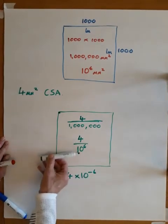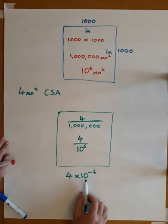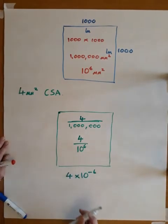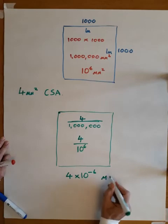So one over, this is the same as four over ten to the six. Four times ten to the minus six, they are the same number. So four times ten to the minus six is four millimeters squared in meters squared.